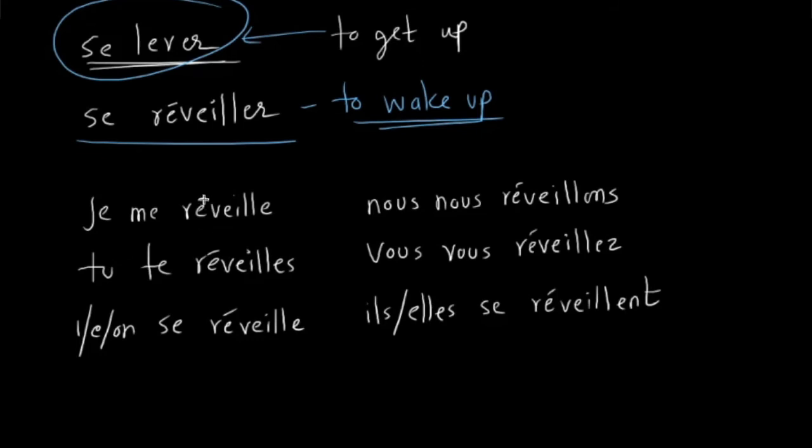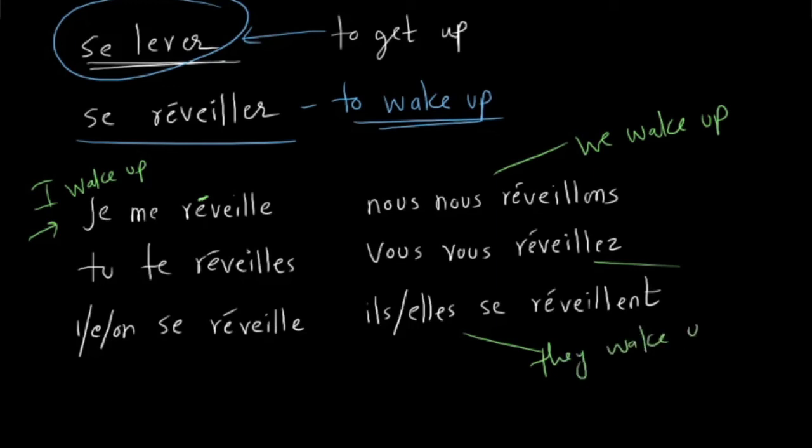Now see the thing here. What does it mean? Akshata, can you translate very quickly these conjugations? I wake up. You wake up. He, she, we wake up. This is again, we wake up. You or you all wake up. And then they wake up. They wake up. Everybody good with this?